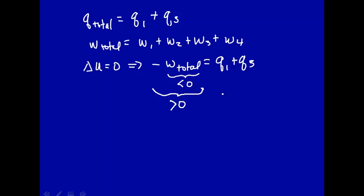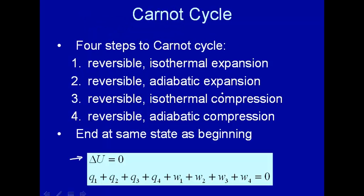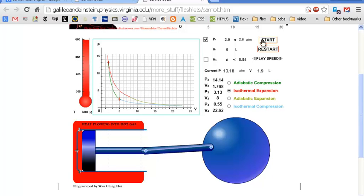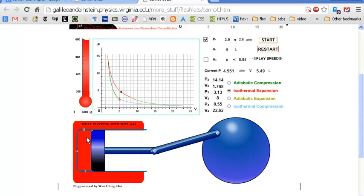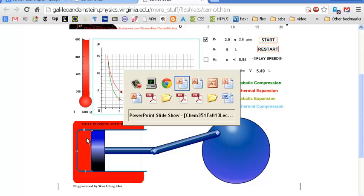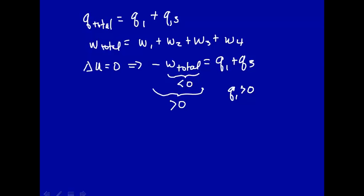Now we know that for Q1, for that expansion, for this expansion, heat is flowing into the hot gas. So Q1 is greater than zero. For that first step, heat is flowing into the system, into the engine, so Q is greater than zero. And we know that Q3 is less than zero.